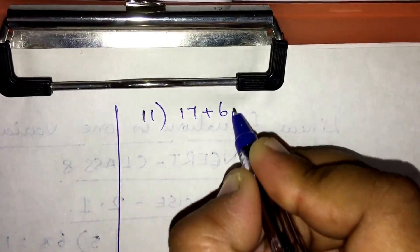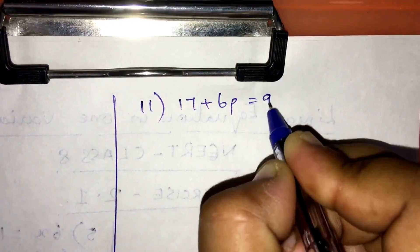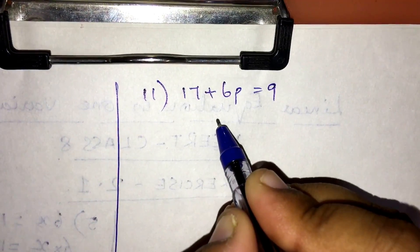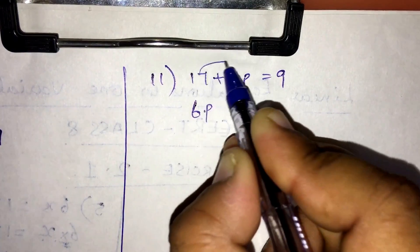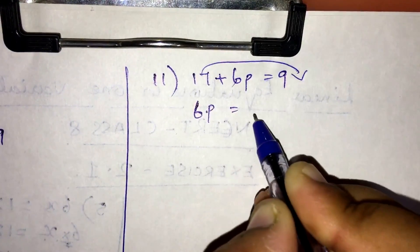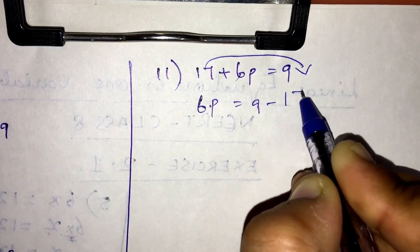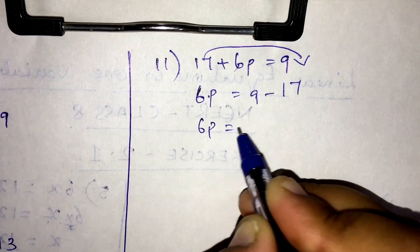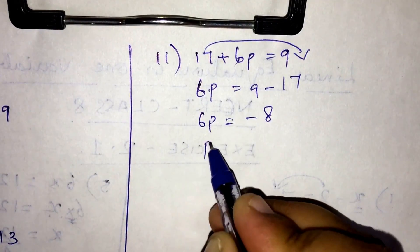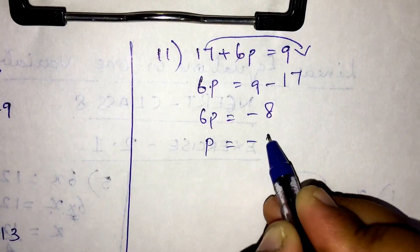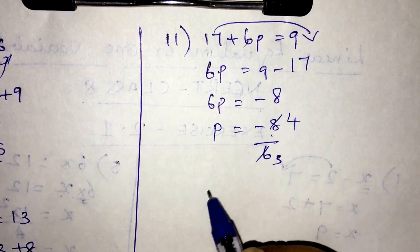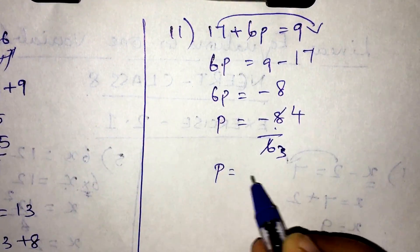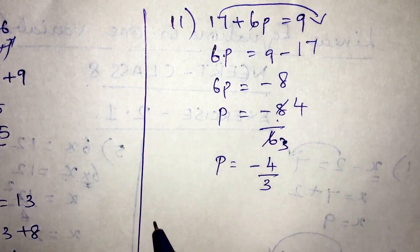Equation number 11: 17 plus 6p is equal to 9. So 6p equals 9 minus 17, giving 6p equals minus 8. Therefore p equals minus 8 divided by 6. Simplifying — 2 fours and 2 threes — the value of p will be minus 4 by 3.